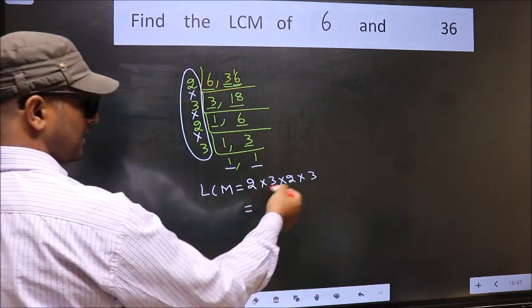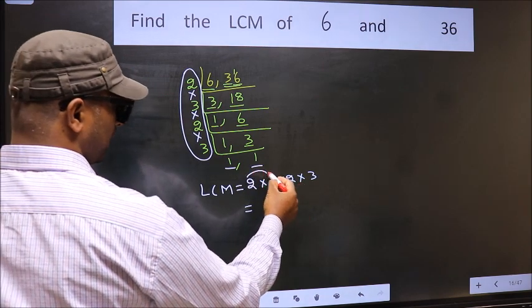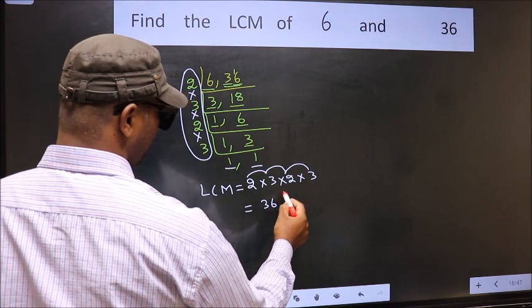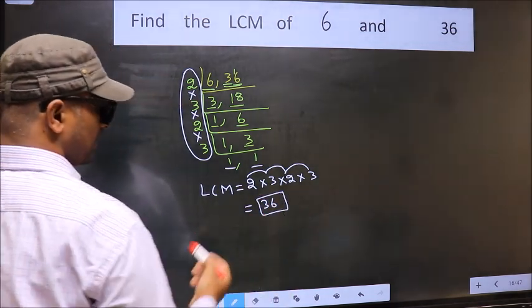So let us multiply these numbers. 2 into 3, 6 into 2, 12 into 3, 36. So 36 is our LCM.